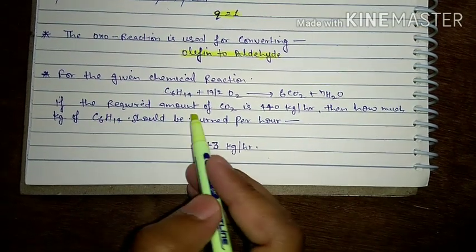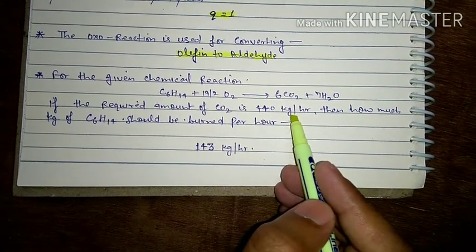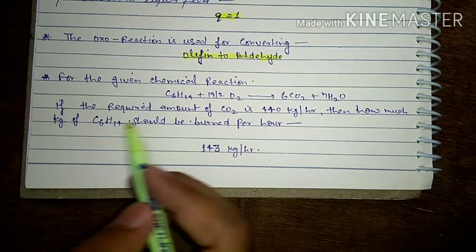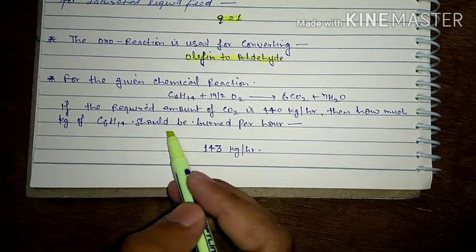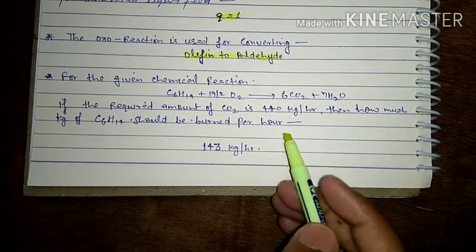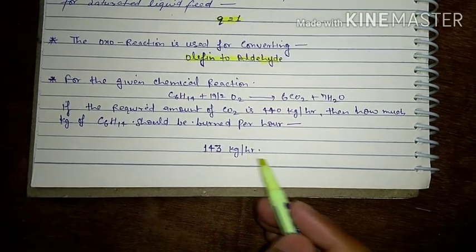If the required amount of CO2 is 440 kg per hour, then how much C6H14 should be burned per hour? That is 143 kg per hour.